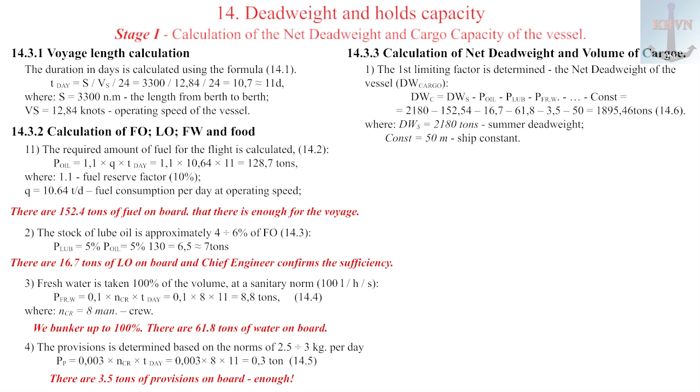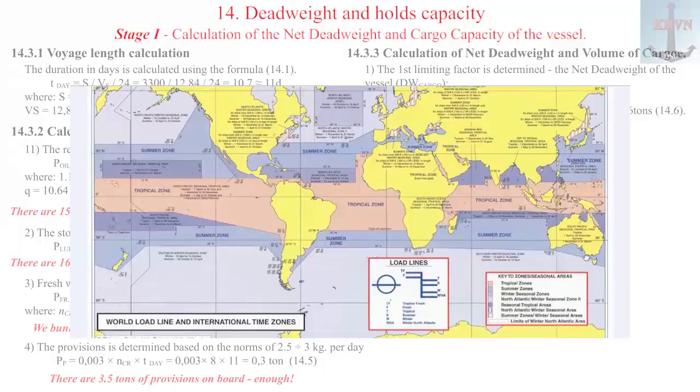2. According to the zone and seasonal area and the date of departure, the permitted load line, metal draft, for your vessel is determined. 3. Constant, subject of draft surveys before loading, total weight in tons of all other unaccounted loads.